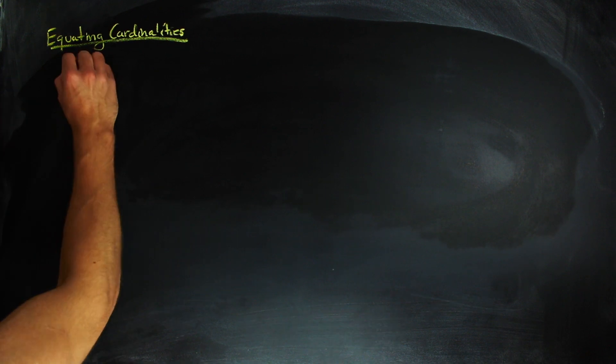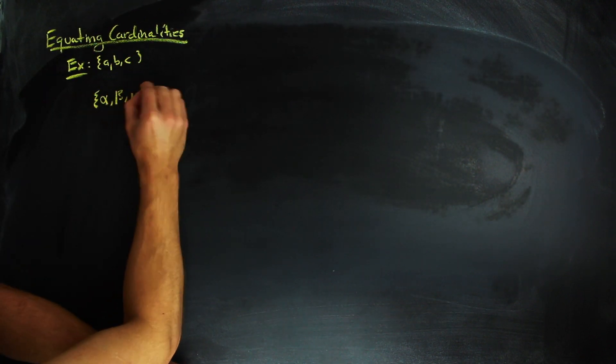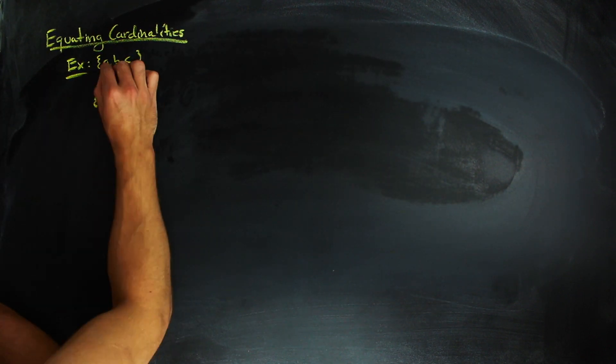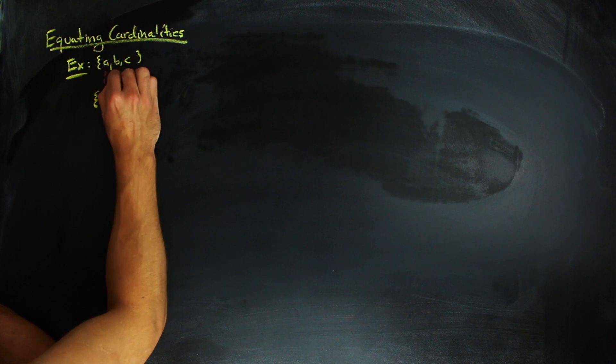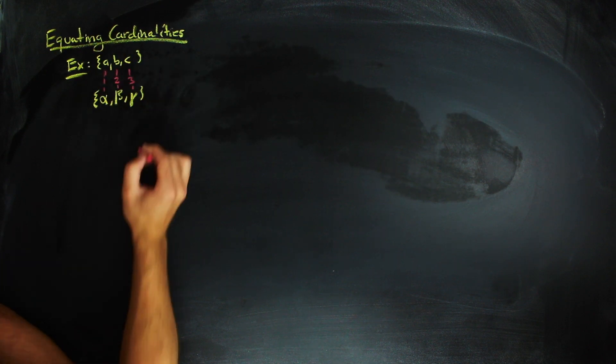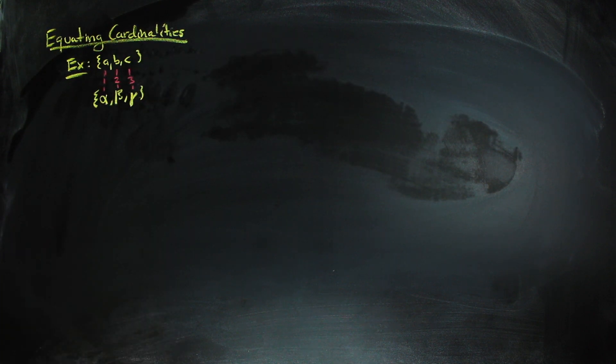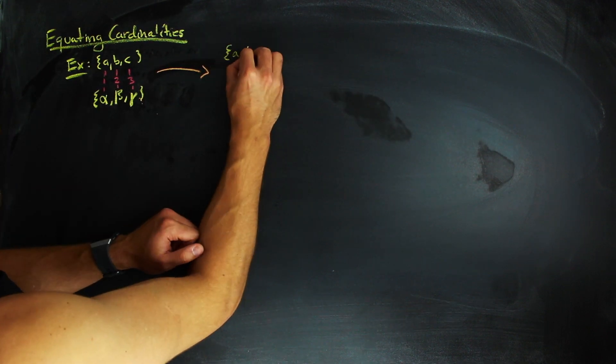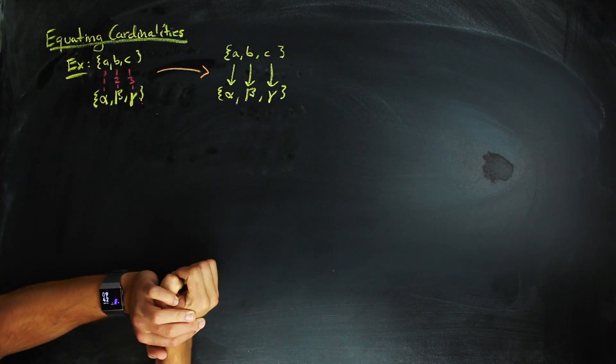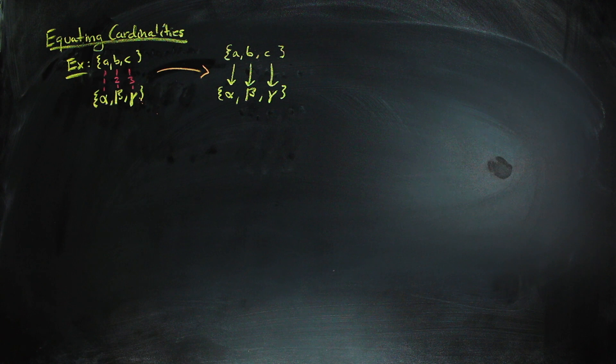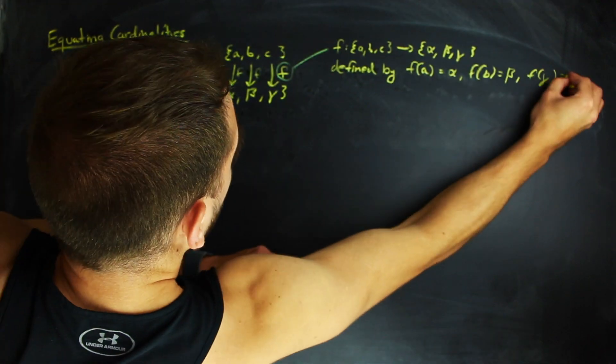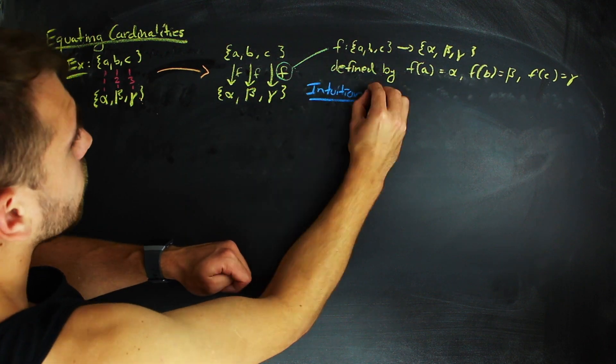But first, we need to start talking about how to equate sets in cardinality. Let's take these sets of cardinality 3 really quickly. We can see that there are three elements in each set, but instead of enumerating the elements of both sets with 1, 2, and 3, we can also enumerate the second set with the first set, like so. And from this enumeration, there is a function f that is defined by the following equalities.